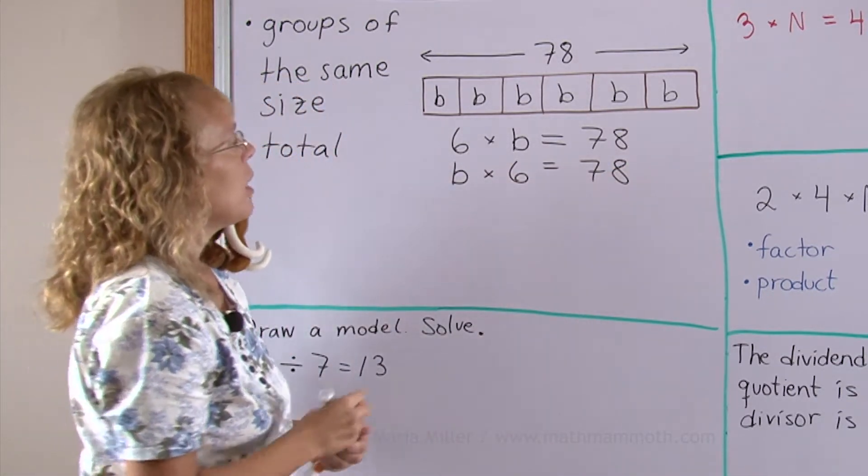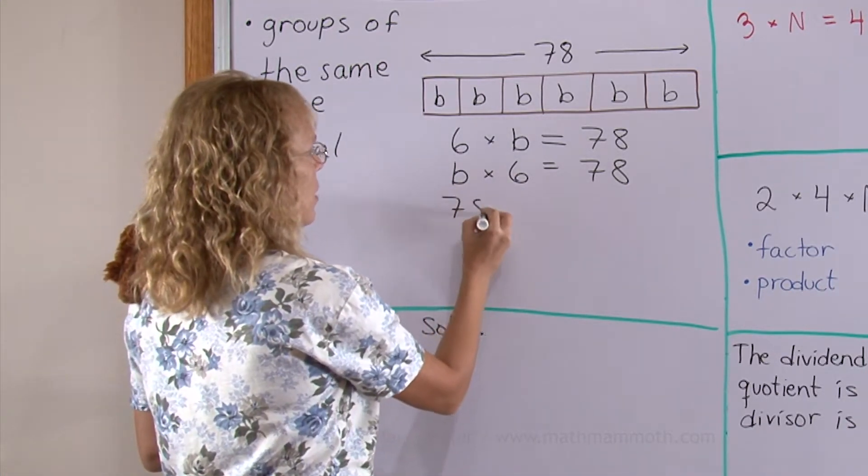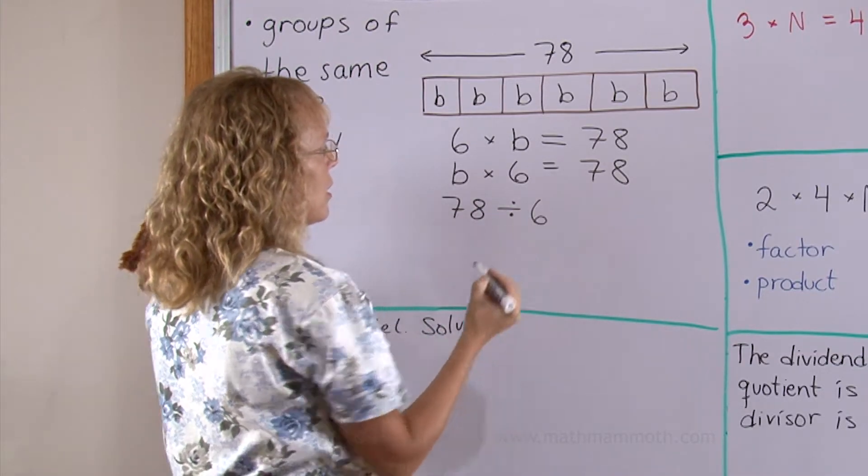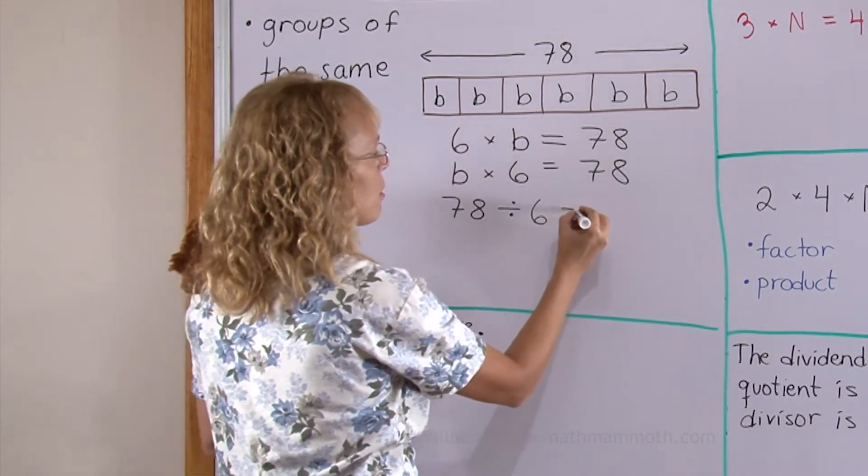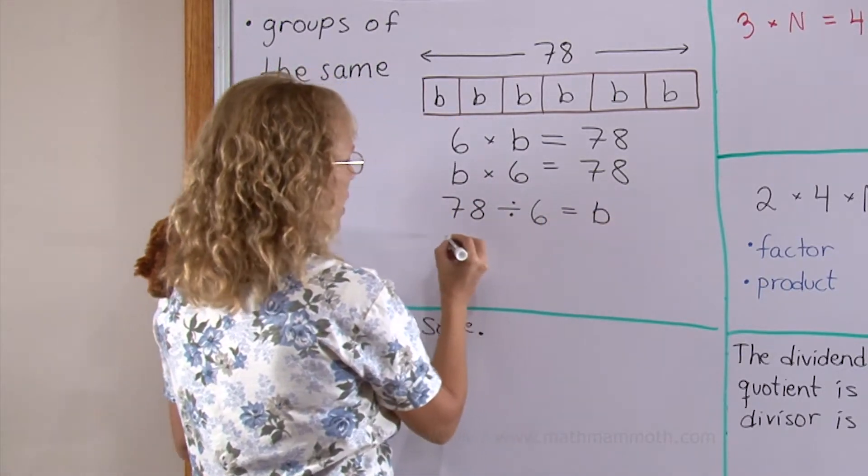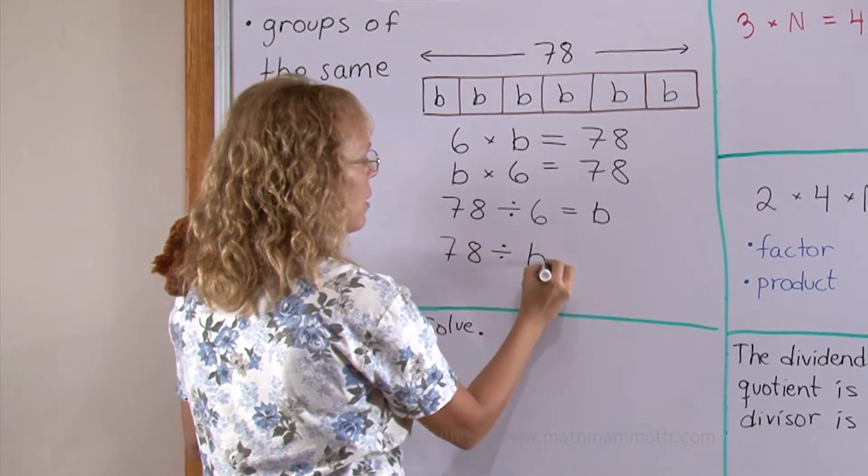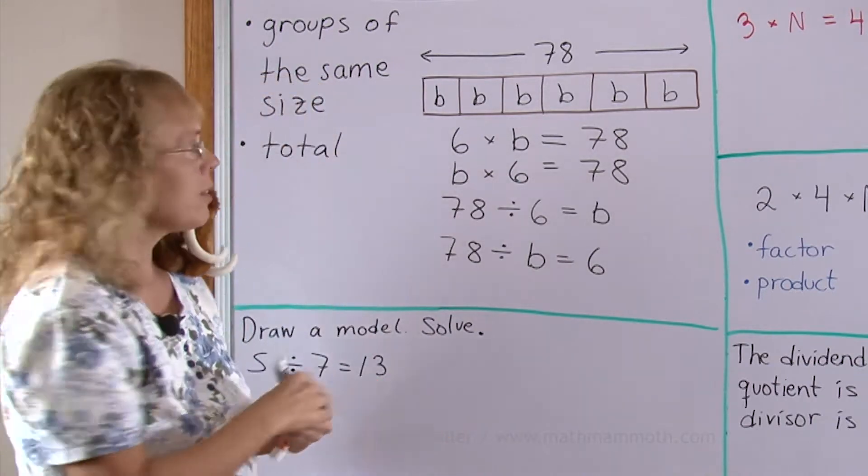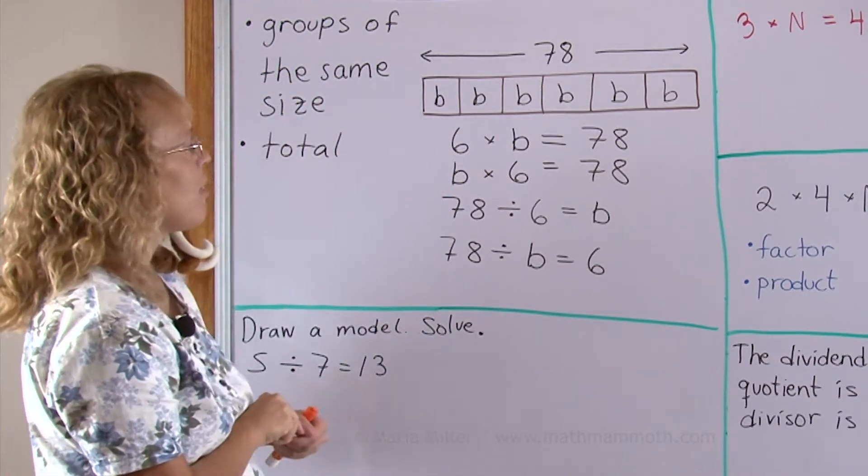In division we start with the total 78 and we can think of it as divided into six groups. So 78 divided by 6 equals how much is in one group, equals B. And then the other division that can be written is 78 divided by B equals 6. These four here form a fact family, a multiplication division fact family.